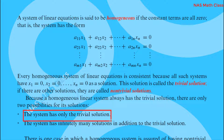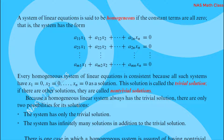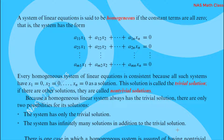The system has only a trivial solution — meaning the trivial solution is the actual solution. But if there is a non-trivial solution, the system has infinitely many solutions in addition to the trivial solution, giving us all infinite solutions.